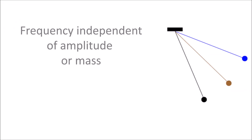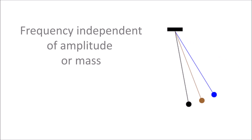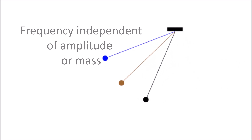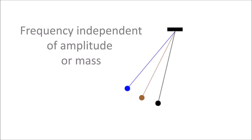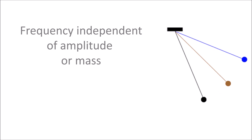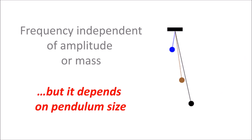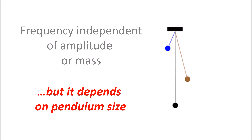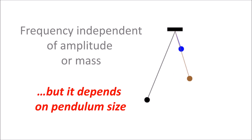The frequency of such movements is independent from the amplitude of the oscillations, and it does also not depend on the mass of the moving object. The frequency depends only on the size or length of the oscillating pendulum.